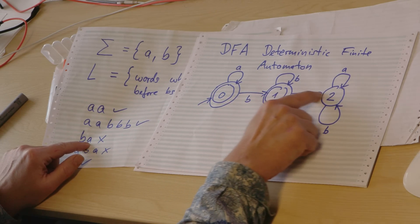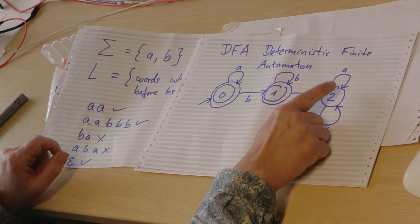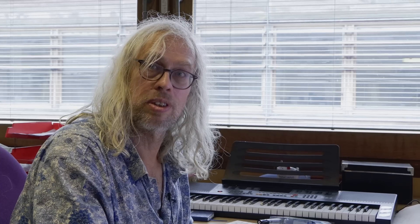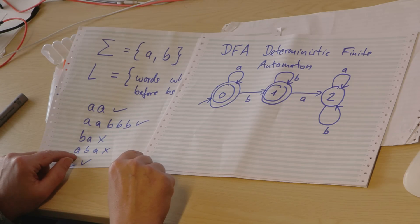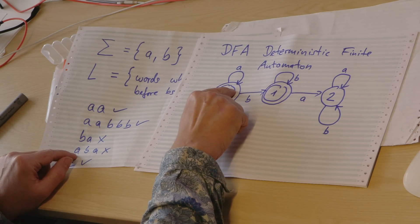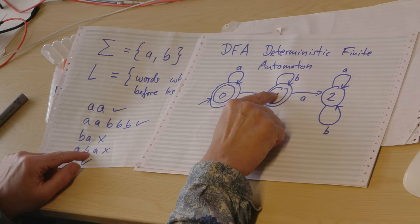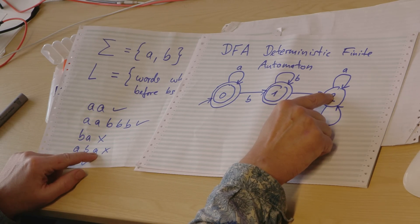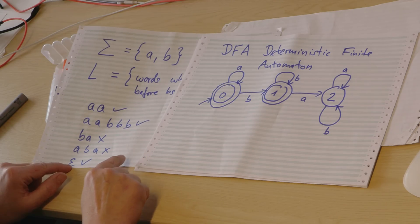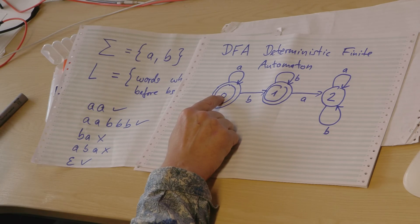Now b a - what happens? I start here, b, I go there. a, I go there and I'm finished, and I'm not in a final state, so I've lost. And now let's try this one: a b a - bad state. And this one, the empty word - I start, I'm already done, I'm in a final state.